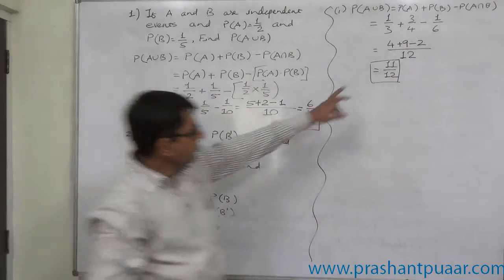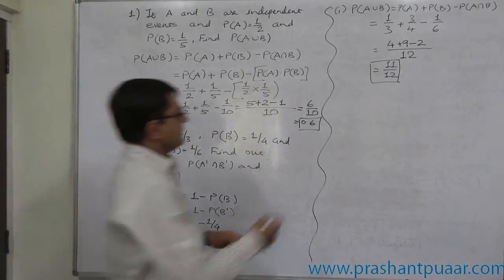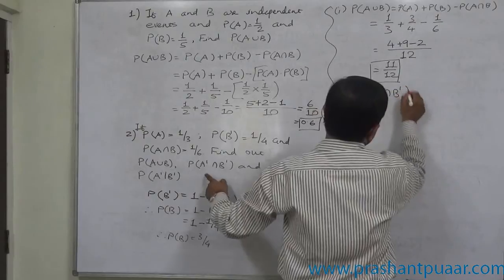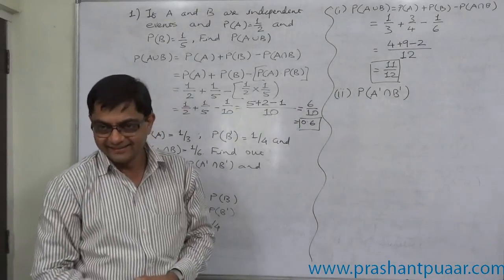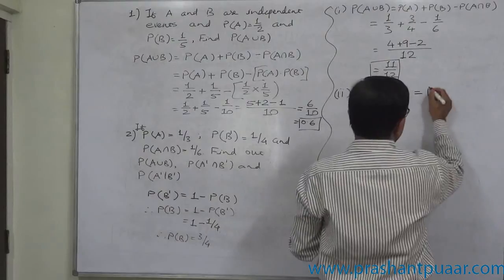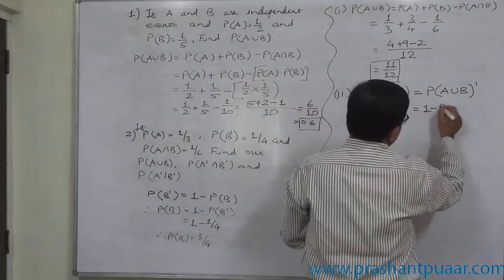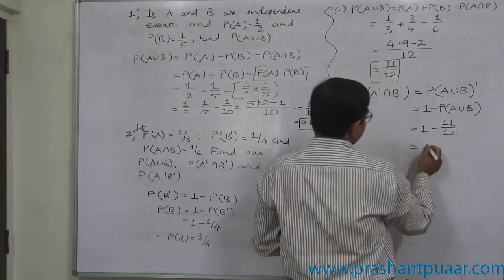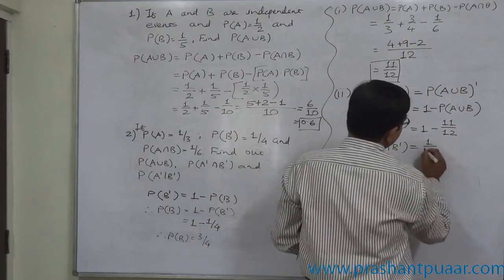Now to find P(A'∩B'): recall De Morgan's rule — A'∩B' equals (A∪B)'. That means P(A'∩B') = 1 − P(A∪B) = 1 − 11/12 = 1/12.